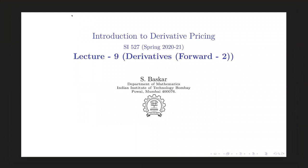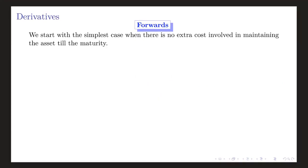Students, in the last class we introduced derivatives and started our discussion on forwards. Today we will continue that discussion. If you recall, our main aim is to find the strike price of the forward contract, F(t, T).